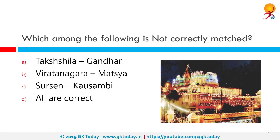Which among the following is not correctly matched? Among these options, the incorrect match is Surcen to Kosambi. Surcen was the capital of Mathura, and the capital of Kosambi was Vatsa.